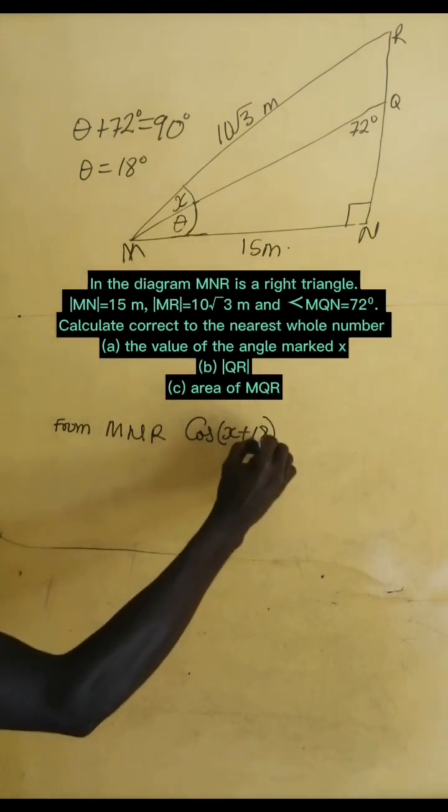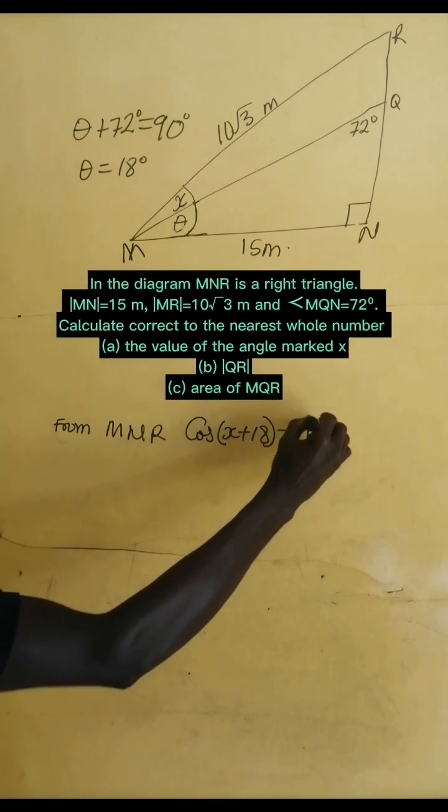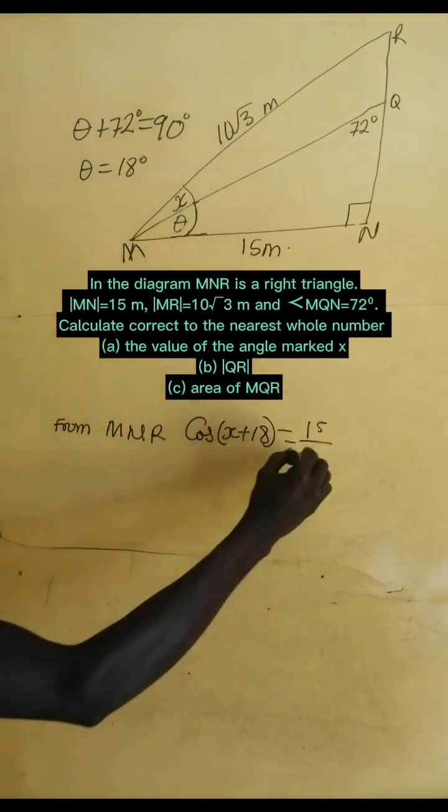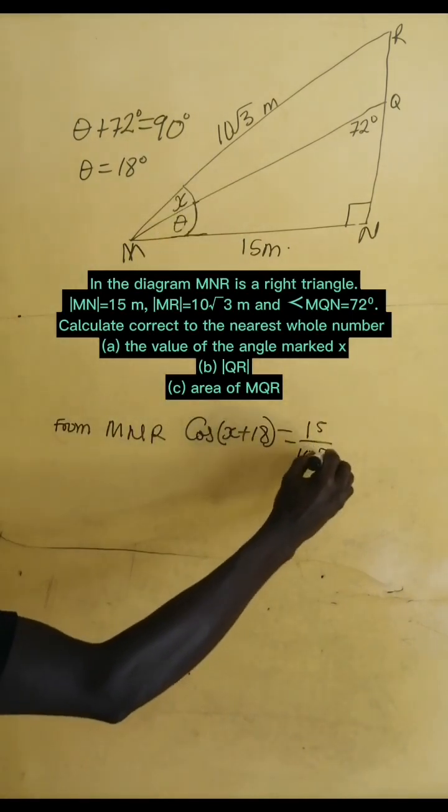So, it will give us adjacent divided by the hypotenuse, 10 root 3.